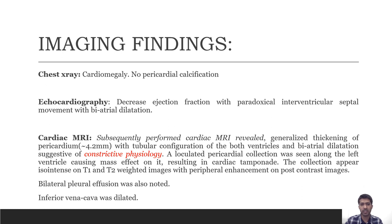Subsequently, cardiac MRI was performed which showed generalized thickening of the pericardium with tubular configuration of both ventricles and the atria with dilated atria, suggestive of constrictive physiology. A loculated pericardial collection was seen along the left ventricle cavity causing compression on the left ventricle, resulting in cardiac tamponade.